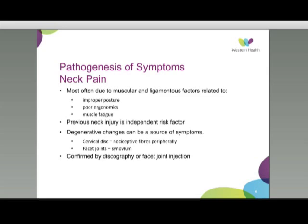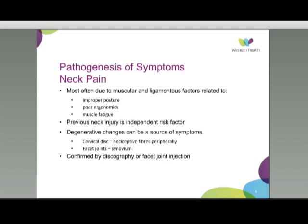Cervical radiculopathy is pain secondary to nerve root compression. There is a degenerative cascade starting with the intervertebral disc gradually losing height, which can then bulge posteriorly and laterally into the canal or foramina. The ligamentum flavum and facet joint capsule can hypertrophy, osteophytes can form on vertebral margins, and all of these together can decrease the size of the canal and foramina, causing nerve root compression. Prolapse of the nucleus pulposus can also release inflammatory mediators around the nerve roots.